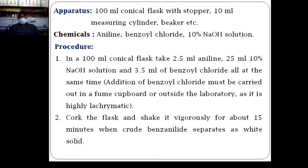Actual procedure: first take a 100 ml conical flask. Add 2.5 ml aniline, 25 ml 10% NaOH solution, and 3.5 ml benzoyl chloride — all at the same time in the 100 ml conical flask having a stopper. The addition of benzoyl chloride must be done carefully, in a fume chamber or outside the laboratory, because benzoyl chloride acts as a highly lachrymatory substance. This is the precaution for addition of benzoyl chloride.